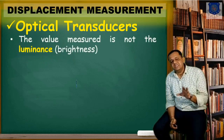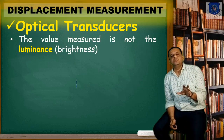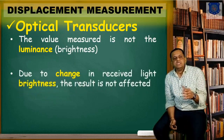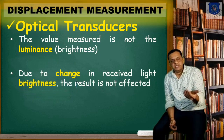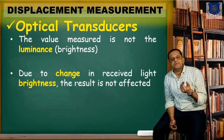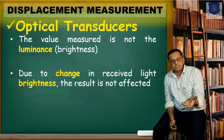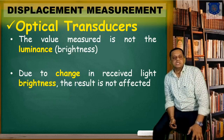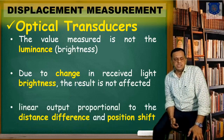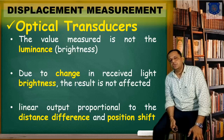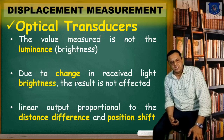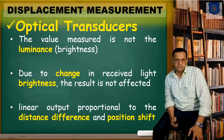The measured value here is not luminance or brightness. We simply check the time of the receiving signal versus the sending signal, so a linear output proportional to the distance difference and position shift can be calculated.